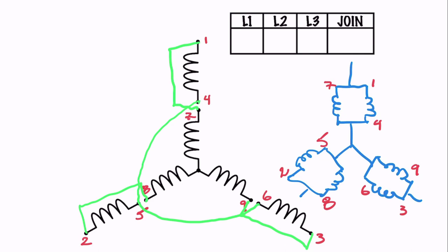So drawing it out: we have one and seven, two and eight, three and nine across there. Then we connect four, five, and six together — that's the joining point. That gives us the lower voltage connection because the windings are in parallel. Voltages in parallel stay the same. Line one connects to one and seven, line two connects to two and eight, line three connects to three and nine. Then four, five, and six are joined together. That's the hardest part of the Y connection — making sure you understand the parallel connection.